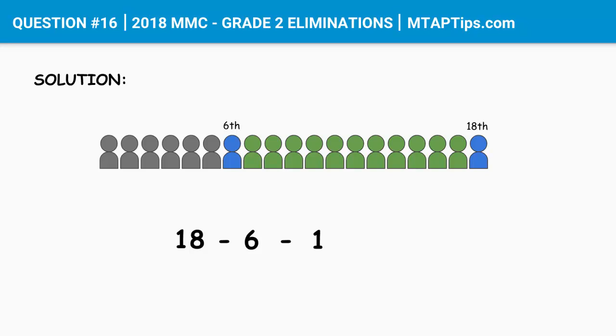So 18 minus 6 minus 1 is equal to 11. There are 11 kids between Juan and Pedro.